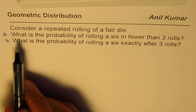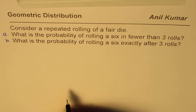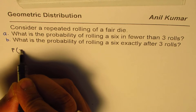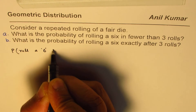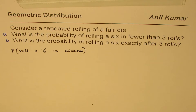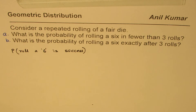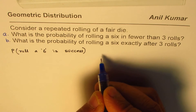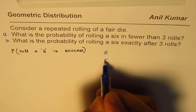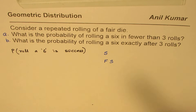Let's look into the first part: what is the probability of rolling a six in fewer than three rolls? That means what is the probability of rolling the six? Rolling a six is success for us. It says fewer than three rolls, meaning you could roll it in the first roll. So the options are: you get success in the very first roll, or you get failure and then success. Fewer than three rolls means it could be one or two rolls.